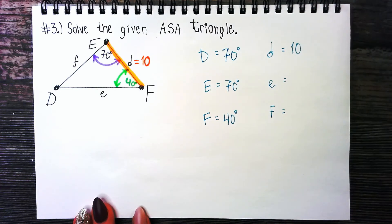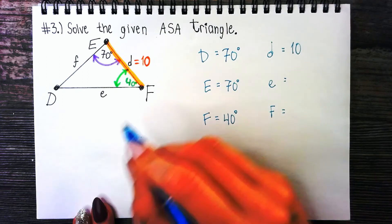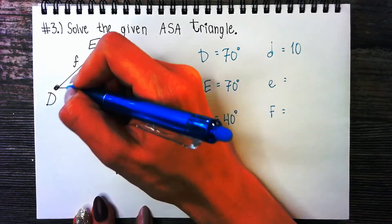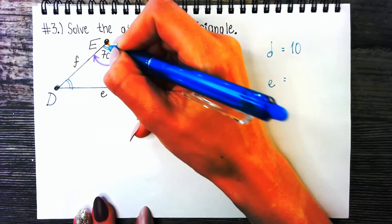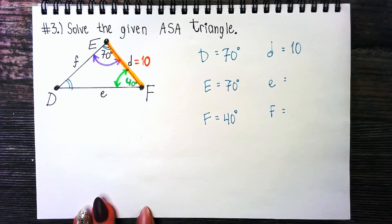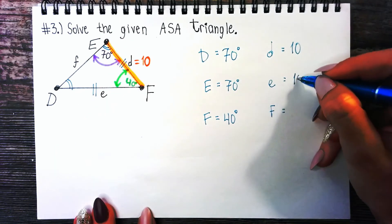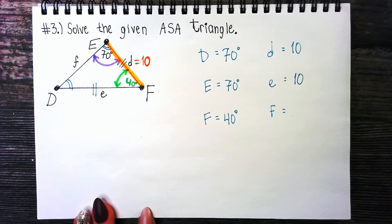What should I do next? If you set up law of sines using d and d as one of the ratios, you'd be a little tricked. Because angle D and angle E are both 70 degrees, this is an isosceles triangle — so side d and side e are equal. If side d is 10 units, then side e is also 10 units, and I don't need law of sines for that.